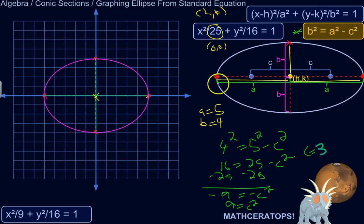So the distance from the center to the focus is 3 units. So we start with the center, 1, 2, 3. So there's one focus, 1, 2, 3. There's the other focus. So that's basically it.